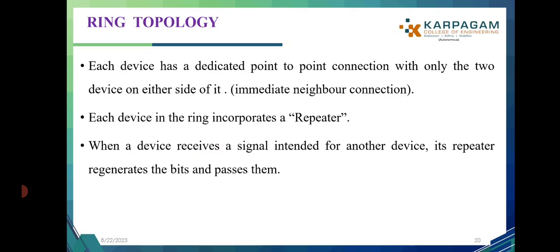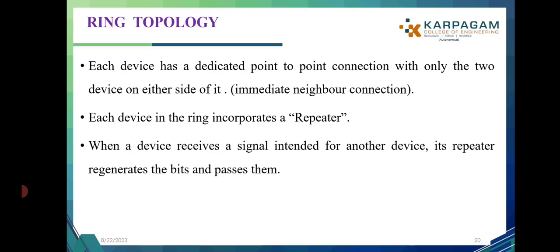Hybrid topology is formed when more than one topology is combined together to form a network structure. For example, in this diagram, bus topology and star topology have been connected together. With this we end this session, and in the upcoming video we will see about the categories of networks. Thank you.